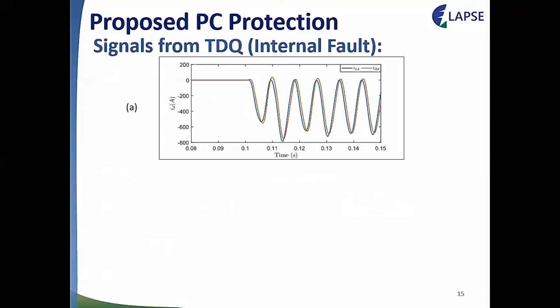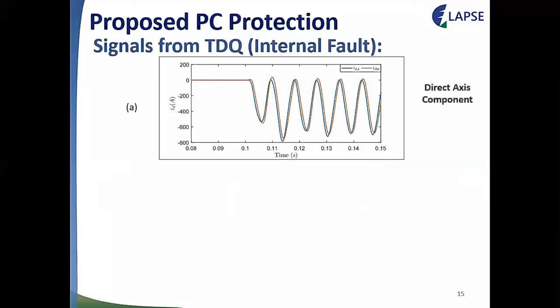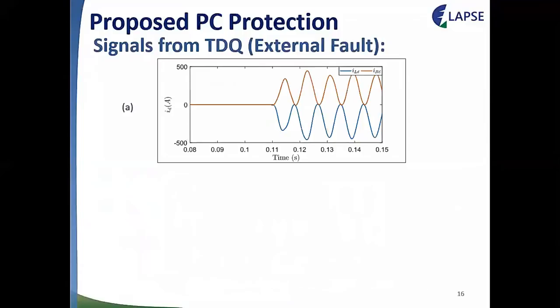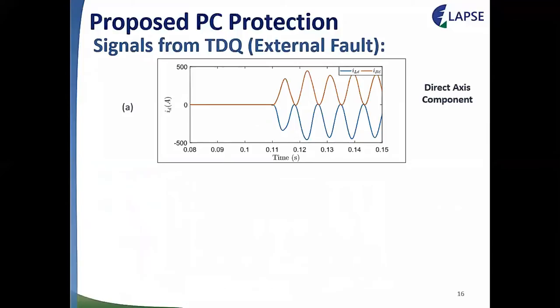When a fault occurs, a DC level superimposes on the oscillating component. To eliminate this, it is proposed to calculate the derivatives of the signals to remove the DC offset from the fault signals. For the study performed, only the derivative of the direct axis current is used, knowing that the quadrature axis current would yield the same conclusions from a protection standpoint. The figure presents signals resulting from TDQ when an internal fault occurs, showing the direct axis component and its derivative — in an internal fault the signals are in phase as expected. For an external fault, the signals are in counter phase.